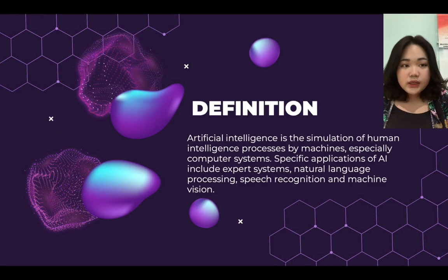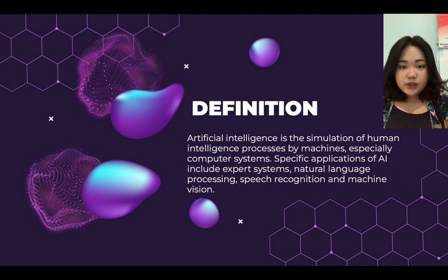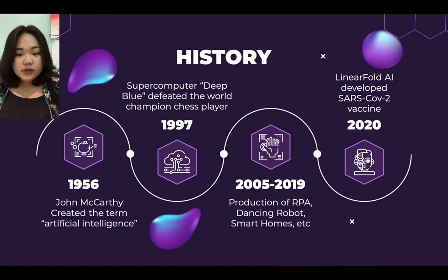AI could be defined as the simulation of human intelligence processes by machines, especially computer systems. Specific applications of AI include expert systems, natural language processing, speech recognition, and machine vision. The term Artificial Intelligence was first coined by John McCarthy in 1956.